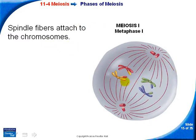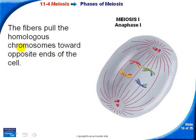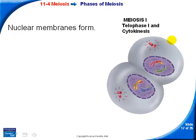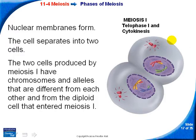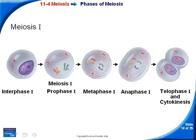Spindle fibers attach to the chromosomes, but notice how they're lined up at the equator differently than in mitosis. The fibers pull the homologous chromosomes toward opposite ends of the cell, so one chromosome goes to one side and one to the other. Nuclear membranes form just like in telophase, and the cell separates into two cells. At the end of meiosis I, we have two cells whose alleles are different from each other and different from the original diploid cell.